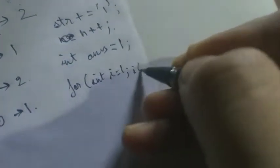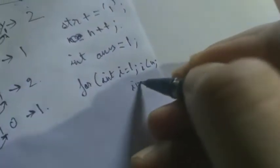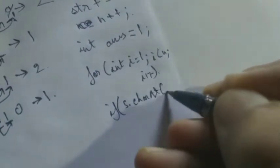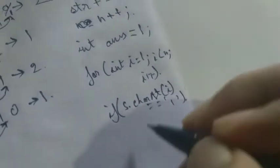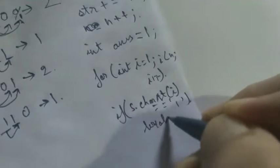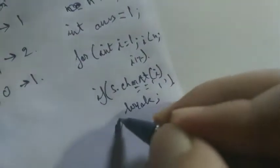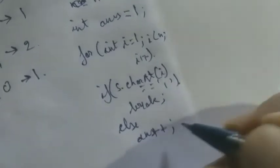For int i equals to, from 1 to n, i++. If s.charAt, that is character at ith position, is equals to 1, then we have to break it. Else we have to increment answer by 1 every time.